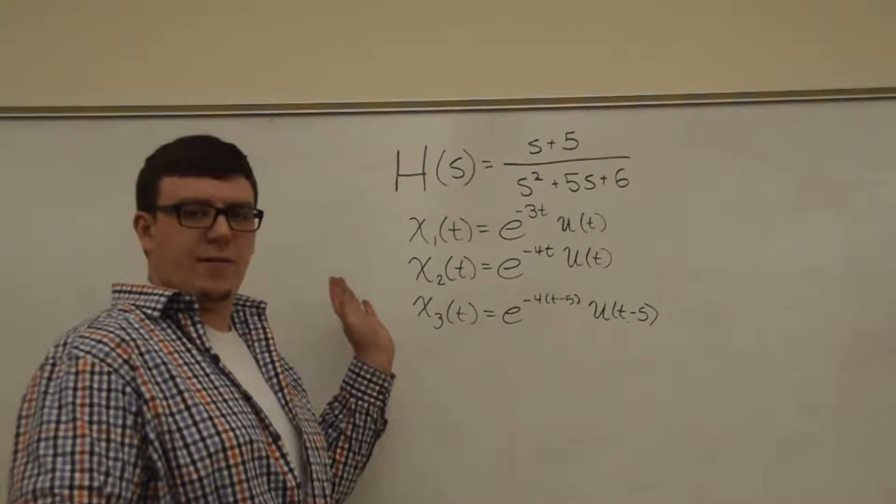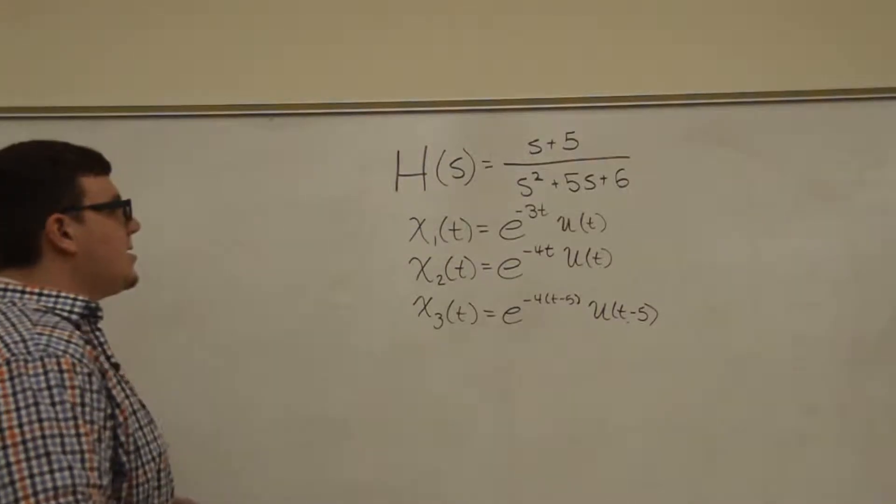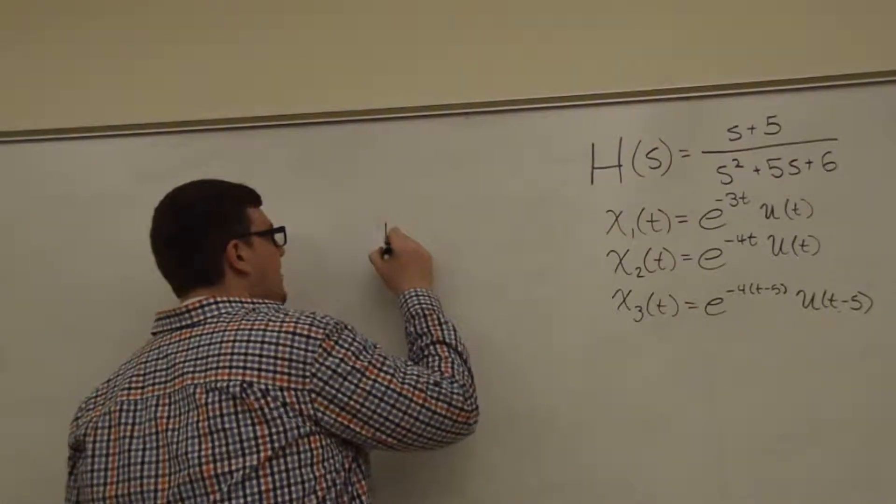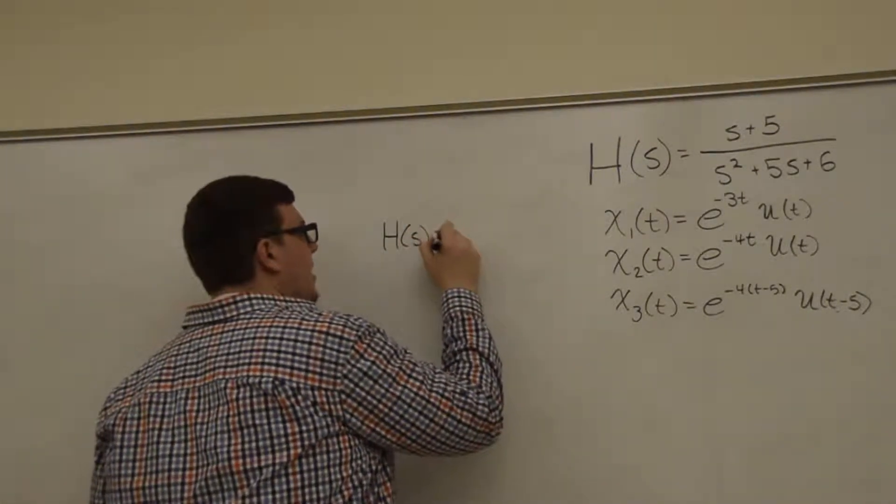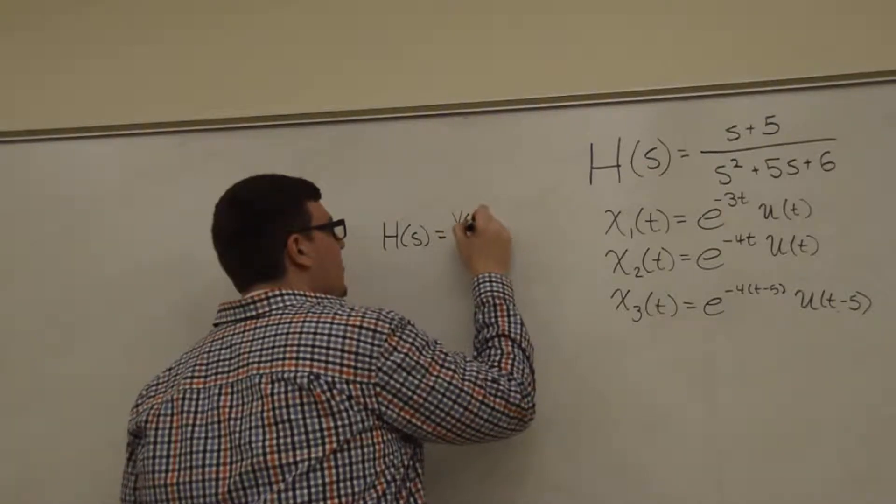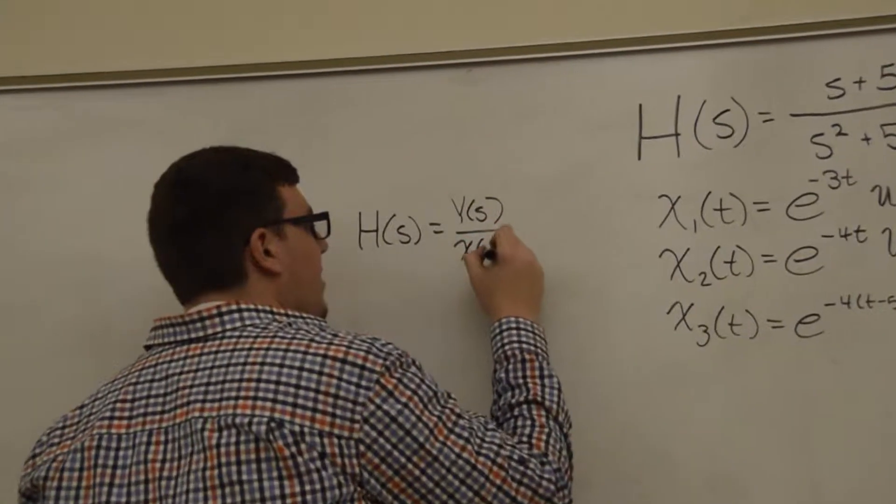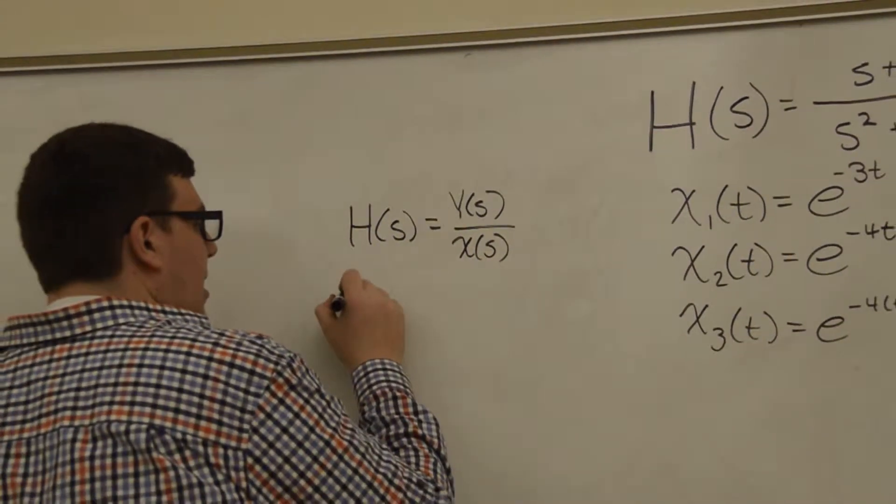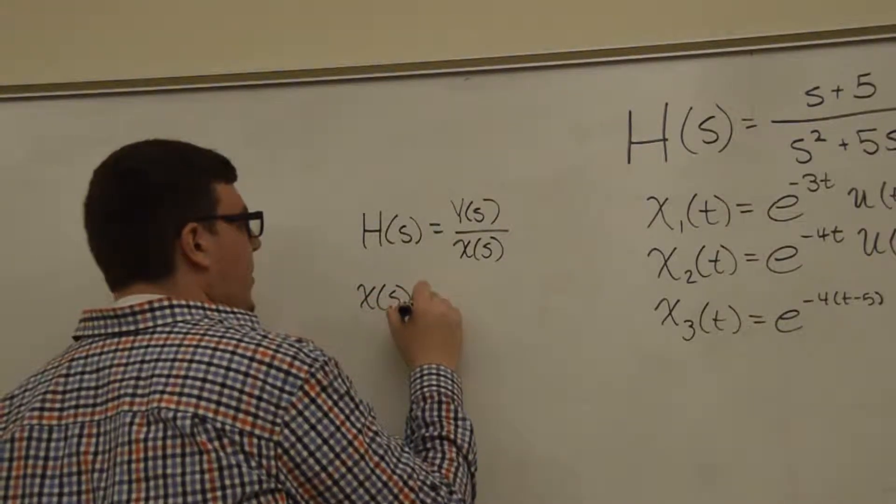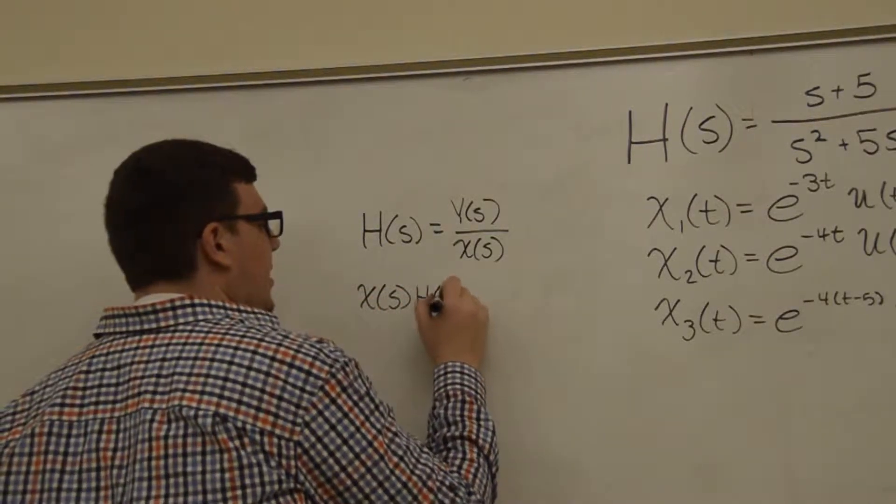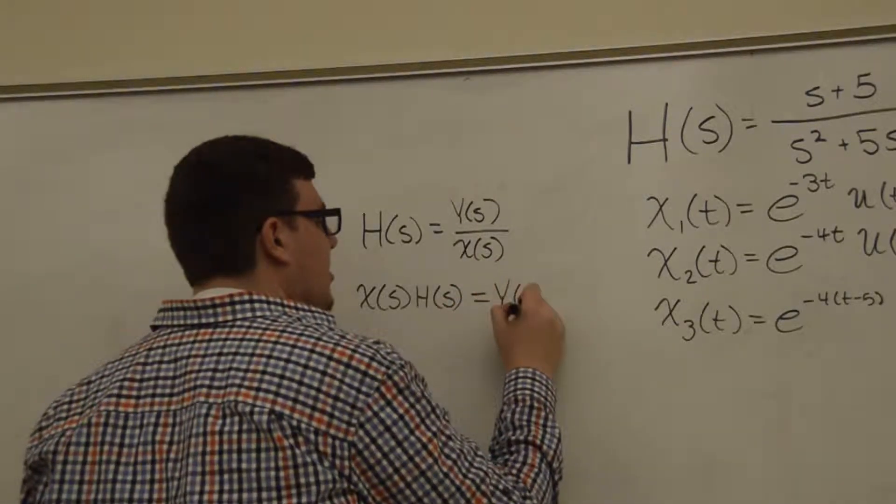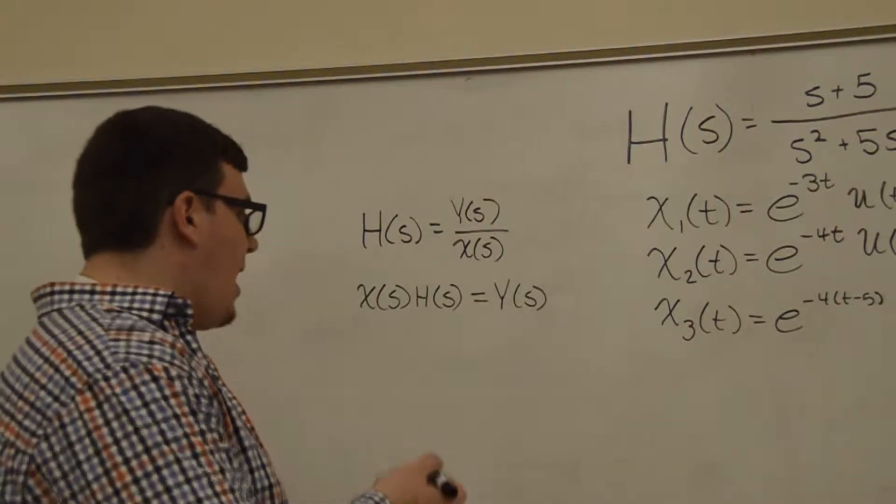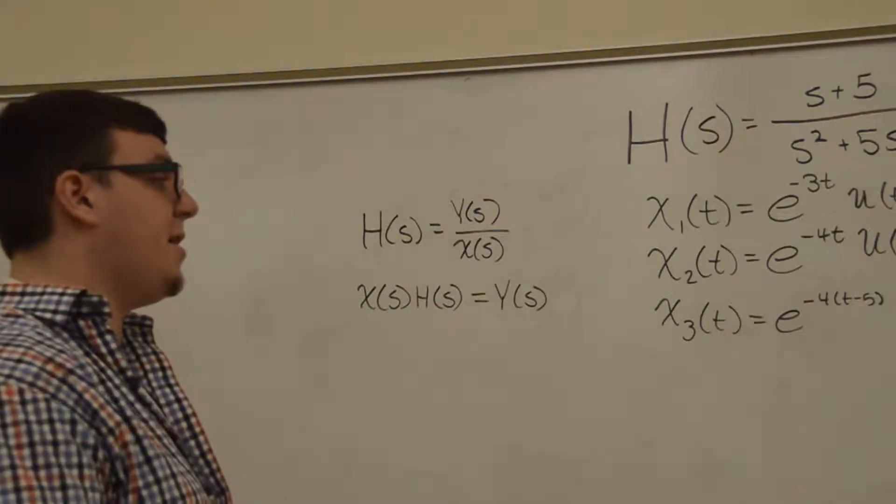So we're going to start with the first input, and what we're going to exploit here is that our transfer function H(s) equals the Laplace transform of the output over the Laplace transform of the input. So if we multiply x(s), the Laplace transform of our input, by the transfer function, we will get the Laplace transform of the output. Then we can just take an inverse Laplace transform and get our output in terms of t.